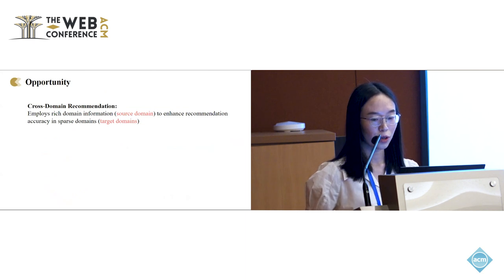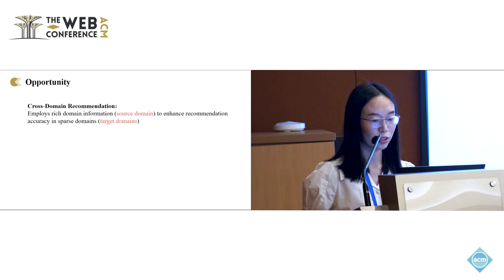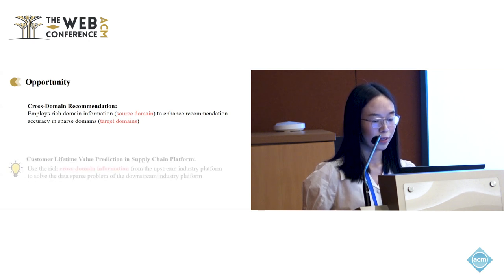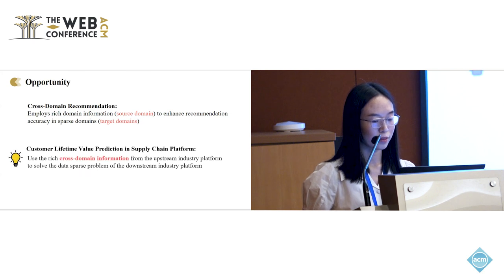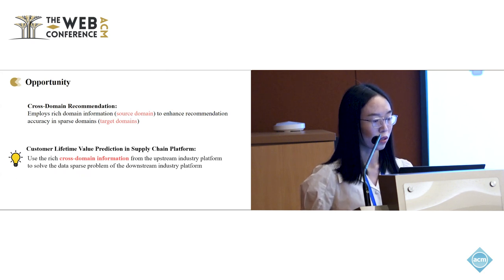Cross-domain recommendation is a technique that employs rich source domain information to enhance recommendation accuracy in sparse target domains. Inspired by this, we can apply a cross-domain method to customer lifetime value prediction in supply chain platforms. We can use the rich cross-domain information from the upstream industry platform to solve the data sparsity issue of the downstream industry platform.